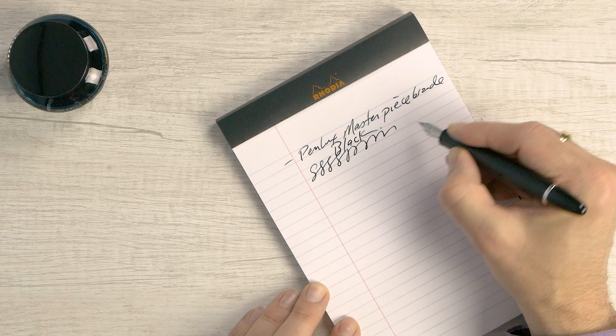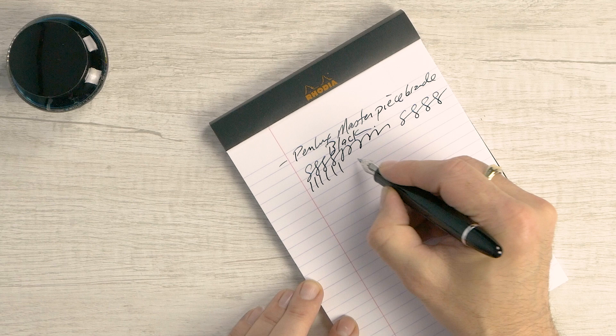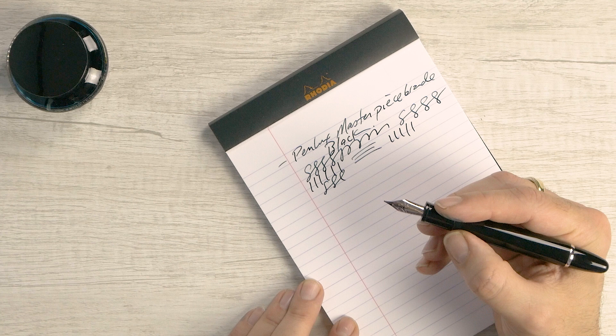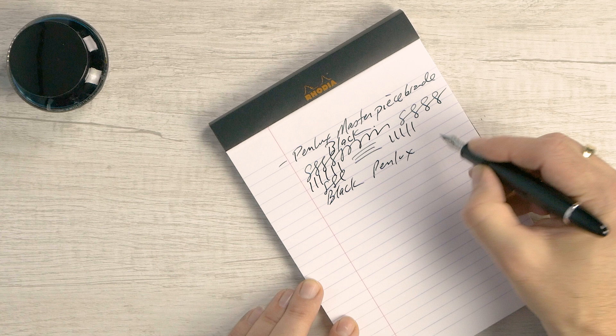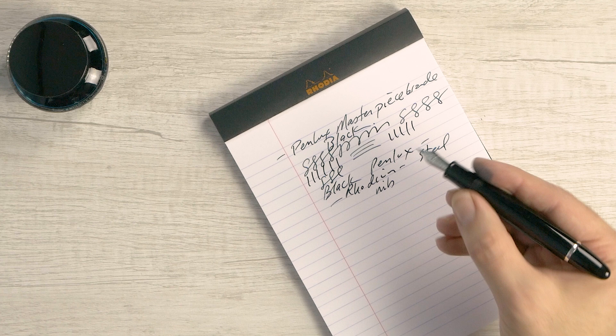So first impression, it writes quite nice. Like I say it writes similar to my Edison's or my Franklin Kristoff's. It is a firm nib. There's no flexibility to it. But this is a very nice medium and it lays down a pretty nice line and this is a steel nib. So it's not rhodium plated, but it sort of looks like if it were for gold, it would be rhodium. It's a nice look for the trim. So it writes nice.